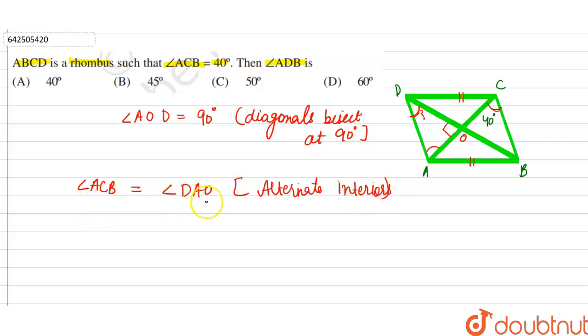Therefore, angle ACB is equal to angle DAO. So we can say that angle DAO is equal to 40 degrees.